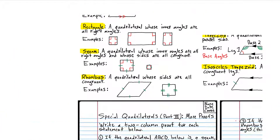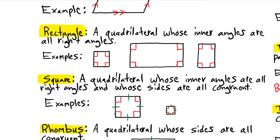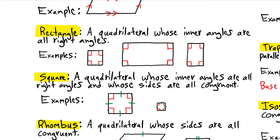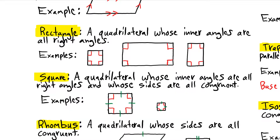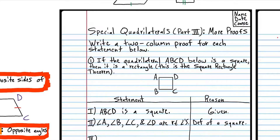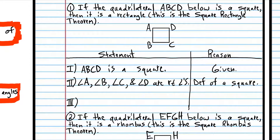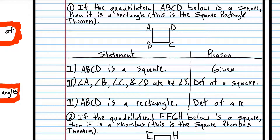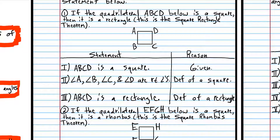We know that if all the interior angles are right angles, that shows the quadrilateral must be a rectangle, because that's the definition of a rectangle. The difference between a square and a rectangle is that a square has all sides congruent — squares are rectangles, but rectangles are not necessarily squares. Because all these angles are right angles, ABCD is a rectangle. And that is the definition of a rectangle. So we proved that if a quadrilateral is a square, it must be a rectangle.